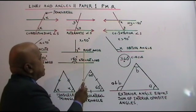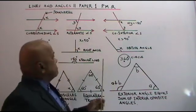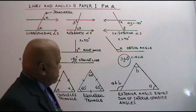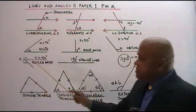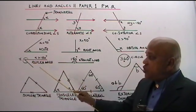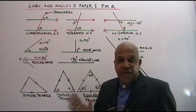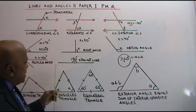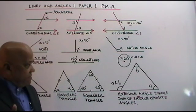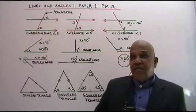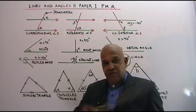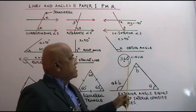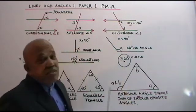Now, if the angle is more than 90 degrees, you call it an obtuse angle. If an angle is more than 180 degrees, you call it a reflex angle. If an angle is exactly 180 degrees, it represents a straight line. And if an angle covers one full round, it is 360 degrees — one circle is 360 degrees.